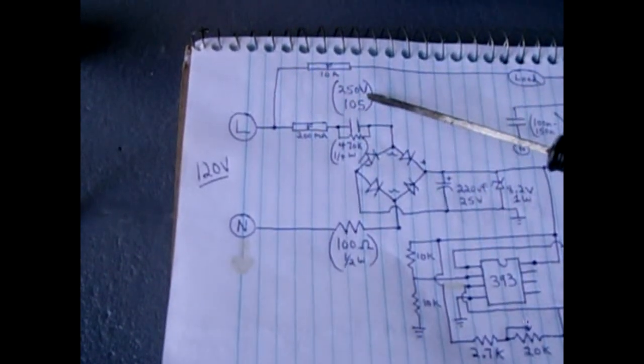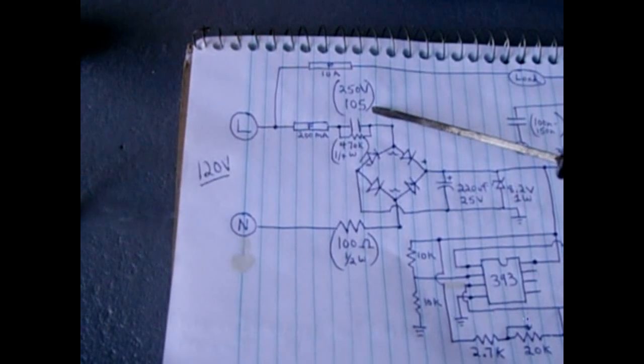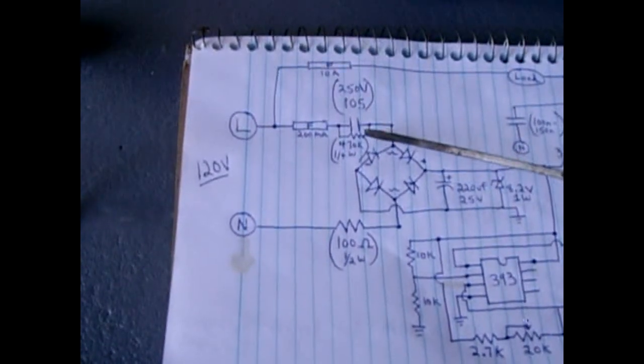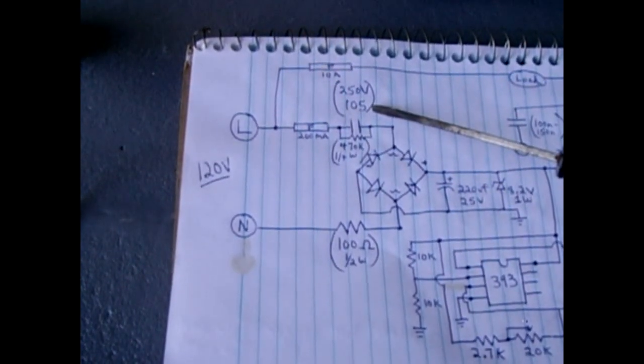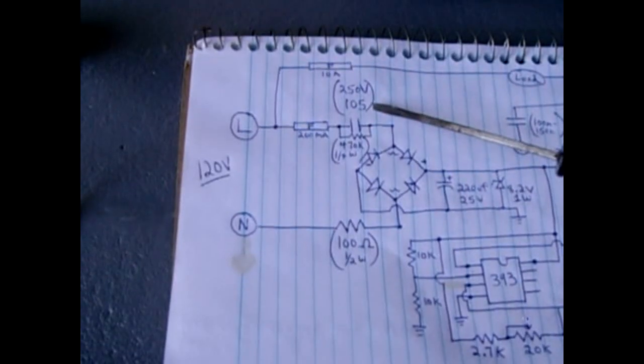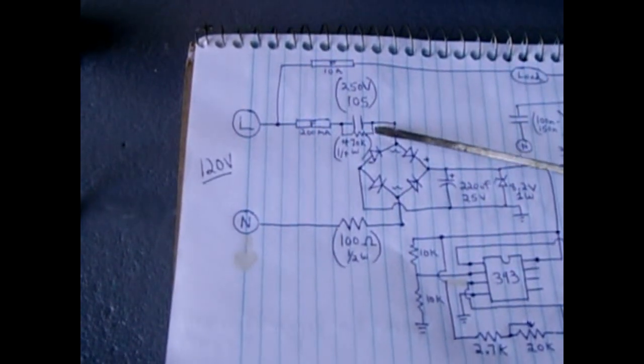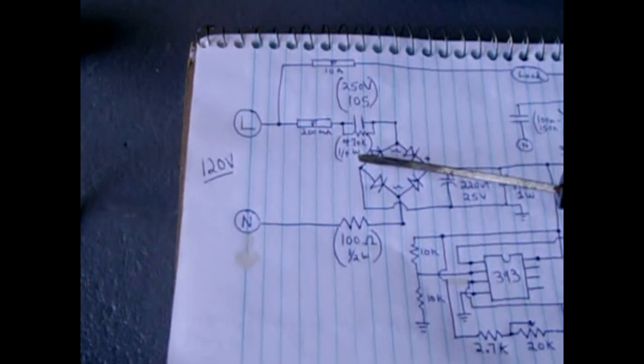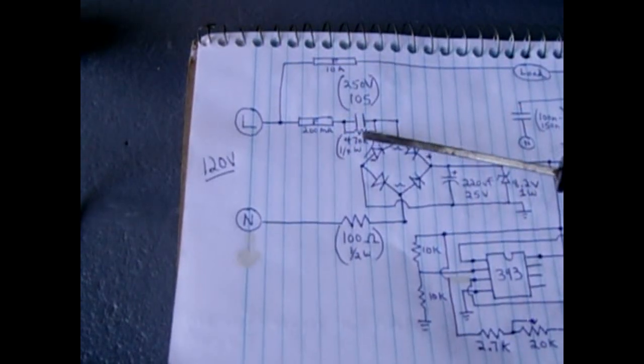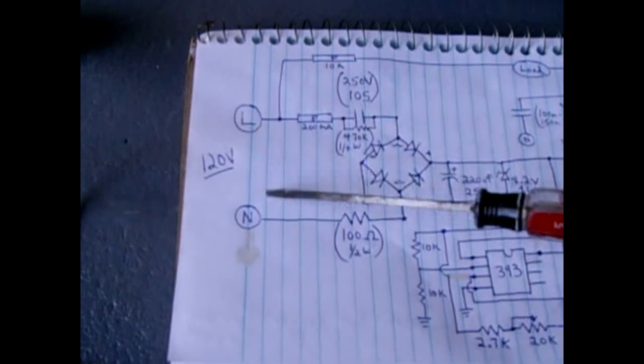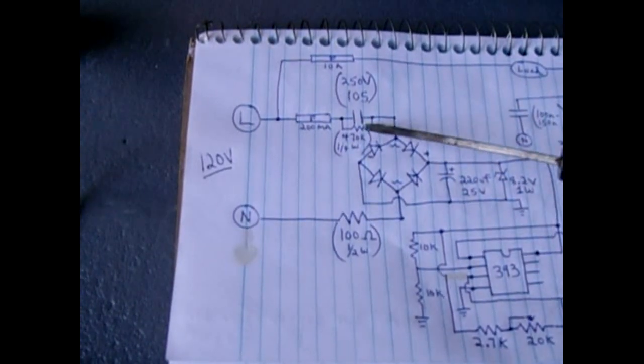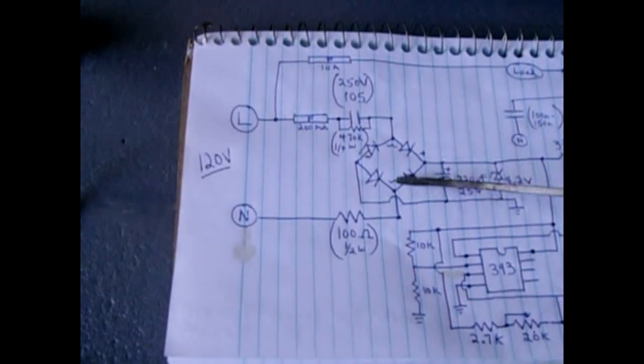The 200 milliamp fuse flows through this transformerless power supply and will flow through a 250 volt 105 or one microfarad capacitor, preferably a type X. You have a 470k ohm quarter watt resistor, and the sole purpose of that is just to act as a bleed resistor when power is disconnected.